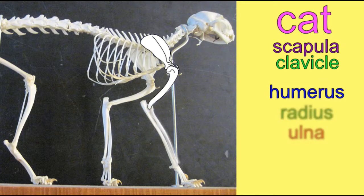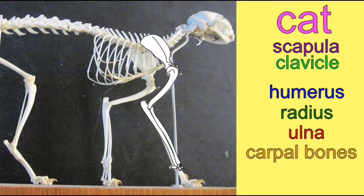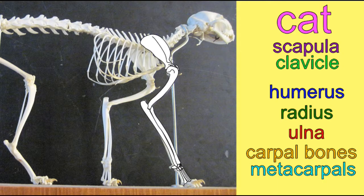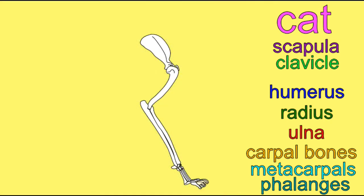One of the reasons to use proximal and distal instead of, say, superior and inferior, is the difference with quadrupedal animals compared to bipedal humans.